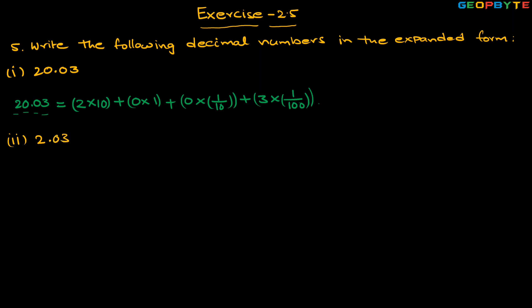The second one is 2.03. We need to expand 2.03. Two is at the ones place, so two × 1. Plus zero is at the tenths place, so zero × 1/10. Plus three is at the hundredths position, so three × 1/100. This is the expanded form of 2.03.